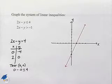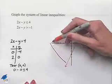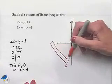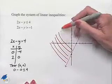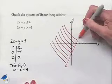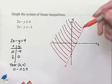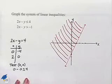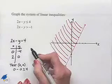We can see that 0 is less than or equal to 4, which is a true statement. So we want to include the origin as part of our solution set, and we're going to shade in on the side of the line that includes the origin.